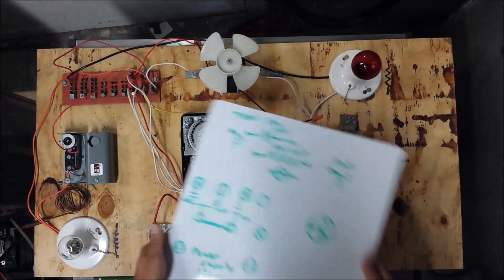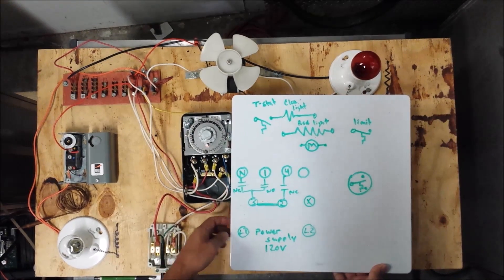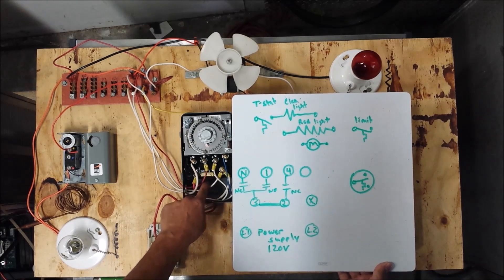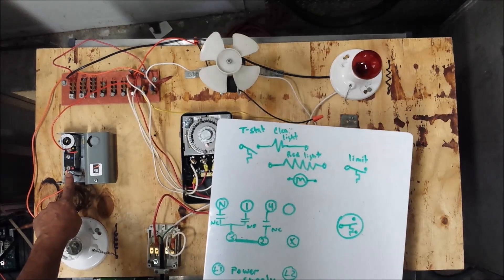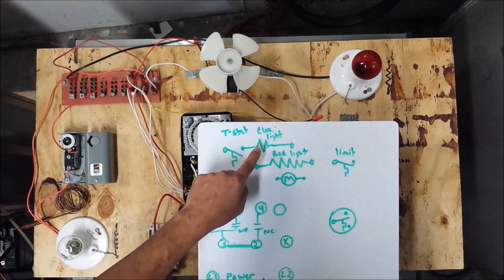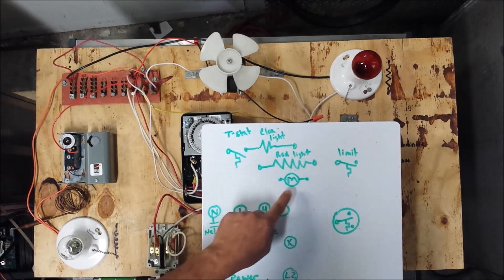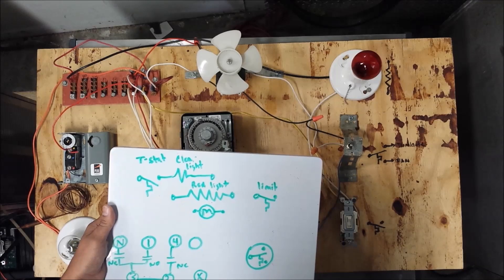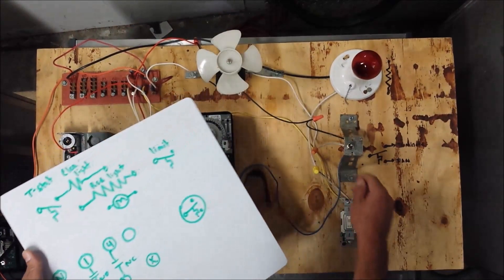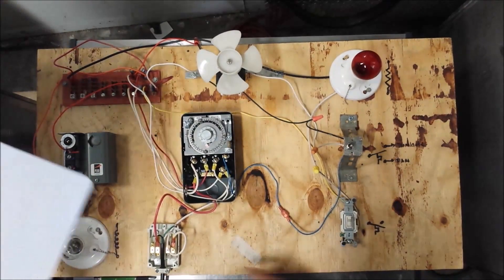I put together here a basic diagram. We've got our L1, L2 — our power supply representing 120 volts. Here are our defrost timer terminals: N1, 4, a blank terminal, 3, 2, and X terminal. We have a thermostat, our clear light bulb representing the liquid line solenoid valve coil, our red light representing the defrost heater, our fan motor, the limit switch, our DTFD thermostat control — this is the thermostat that closes on temperature rise and closes on temperature fall — and our power supply.